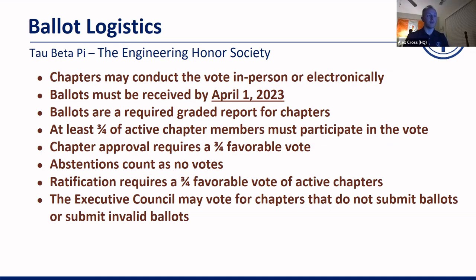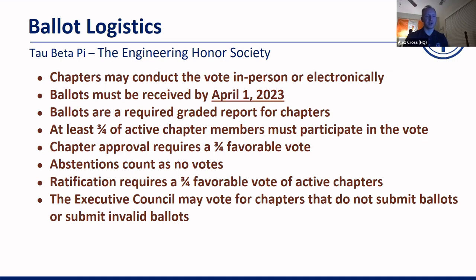Ratification requires a three-fourths favorable vote of active chapters. Of the 251 chapters, we need three-fourths of them to vote in favor of each amendment for that amendment to be ratified. Finally, the executive council may vote for chapters that do not submit ballots or submit invalid ballots. For chapters that do not submit ballots, the executive council is empowered to do so — we used this the last couple of years when chapters were running into issues because of the pandemic. But we hope that all chapters will participate because it is a required submission.